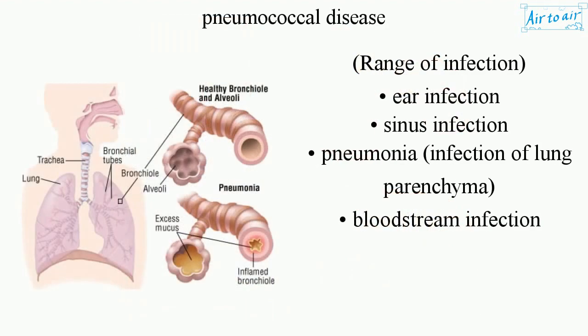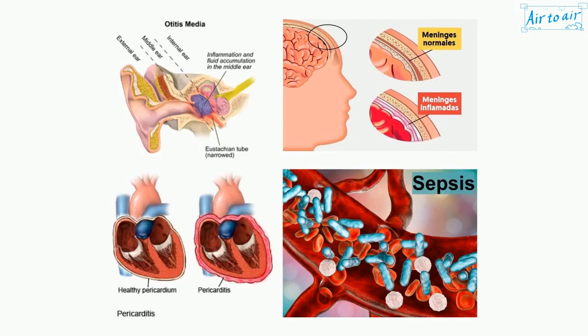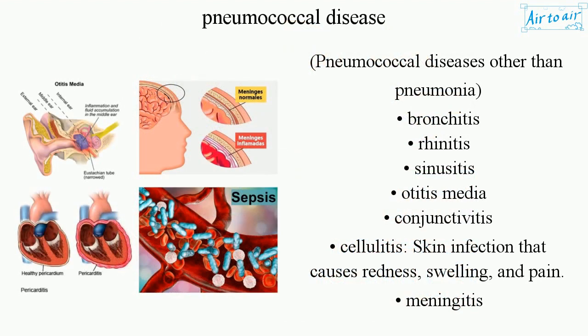Range of infection: ear infection, sinus infection, pneumonia (infection of lung parenchyma), and bloodstream infection. Pneumococcal diseases other than pneumonia include bronchitis, rhinitis, sinusitis, and otitis media.